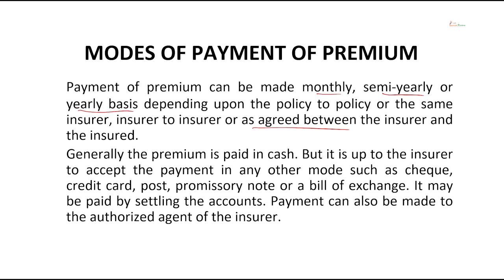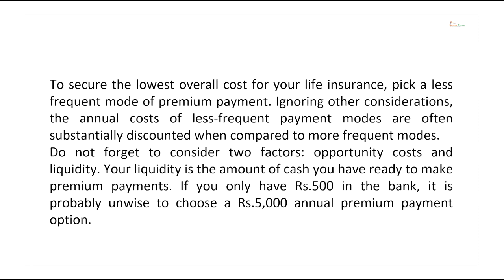Generally, the premium is paid in cash, but it is up to the insurer to accept the payment in any other form such as cheque, credit card, post, promissory note, or a bill of exchange. It may be paid by settling the accounts also. Payments can also be made to the authorized agent of the insurer. To secure the lowest overall cost of your life insurance, pick a less frequent mode of premium payment — preferably on a yearly basis, as annual payments are often substantially discounted compared to more frequent modes.